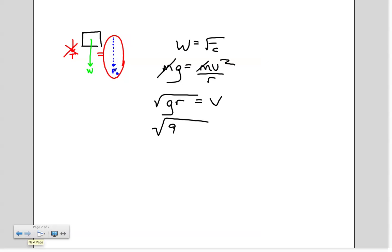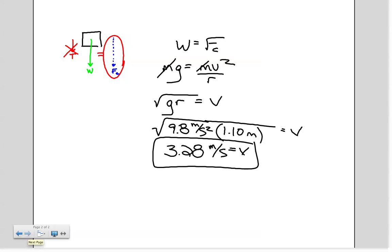Of course, making some simple substitutions, 9.8 meters per second squared times my radius of 1.10 meters is equal to my speed. And I throw that into my calculator and get 3.28 meters per second is equal to V. This is part B of problem number 16.